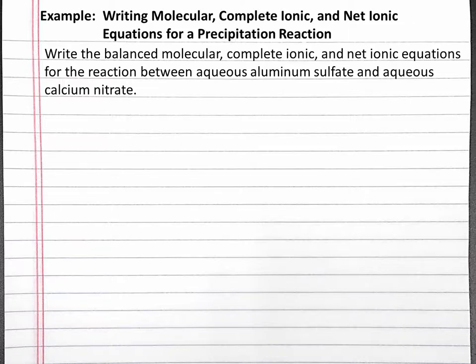In this example, we'll write the molecular, complete ionic, and net ionic equations for a precipitation reaction. Our problem reads: write the balanced molecular, complete ionic, and net ionic equations for the reaction between aqueous aluminum sulfate and aqueous calcium nitrate.